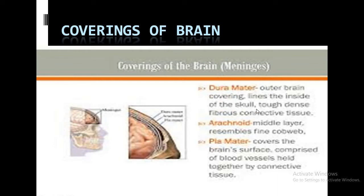The dura mater layer is present just beneath the skull. It is known as dura because it is tough and dense, and it is composed of fibrous connective tissue. The second or middle layer of the brain covering is the arachnoid mater, which resembles a cobweb — arachnoid means like a spider web or a network-like structure.